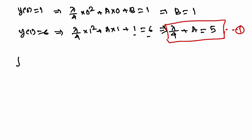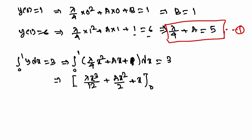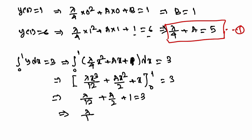From the isoperimetric condition, the integral from 0 to 1 of y dx equals 3. Substituting y(x) and integrating gives lambda x-cubed over 12 plus a x-squared over 2 plus x evaluated from 0 to 1 equals 3. Putting in the limits: lambda over 12 plus a over 2 plus 1 = 3, so lambda over 12 plus a over 2 = 2, which gives lambda over 6 plus a = 4. Call this equation 2.